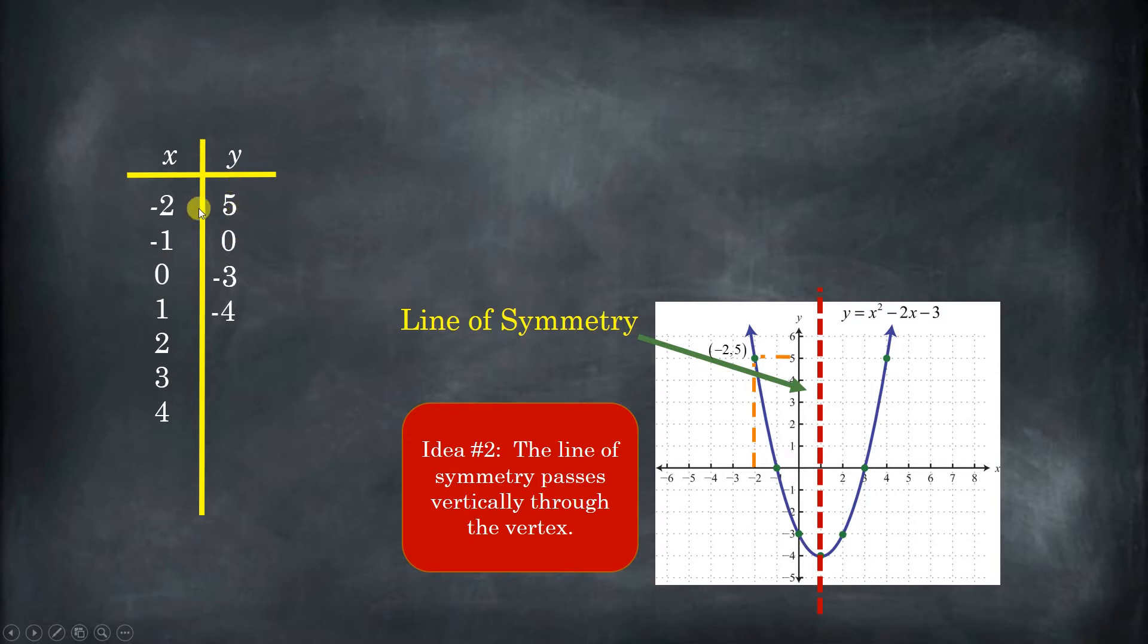We're decreasing. Our x inputs are increasing while our y outputs are decreasing. And then we get to this point where we get 1, negative 4. And then on the other side, the pattern repeats itself in the other direction. It starts increasing. Do you see?